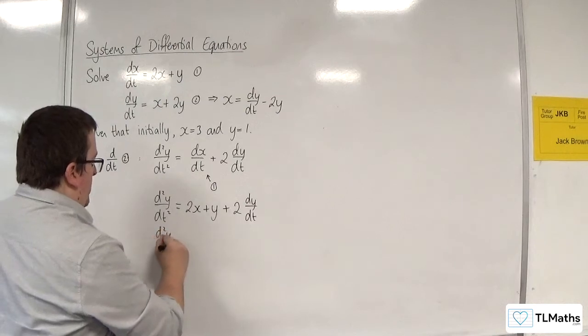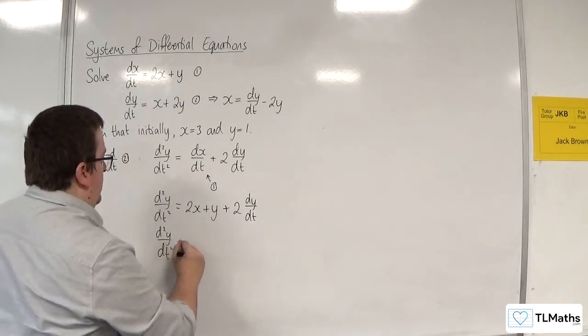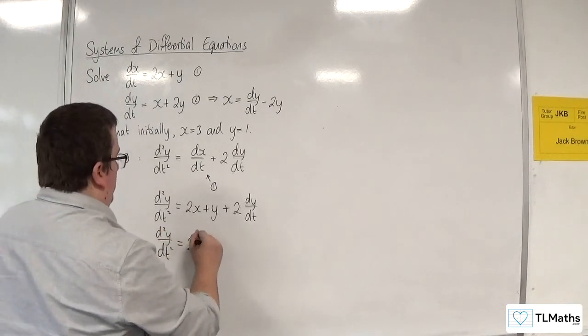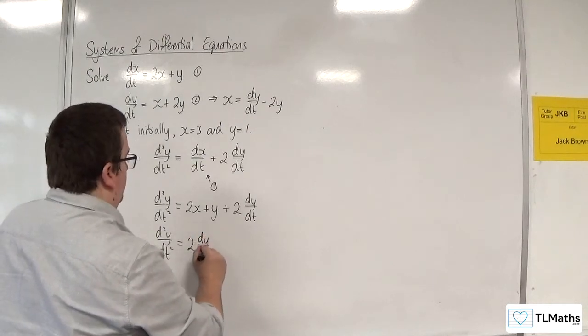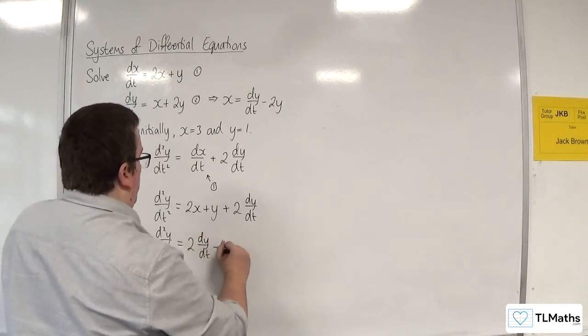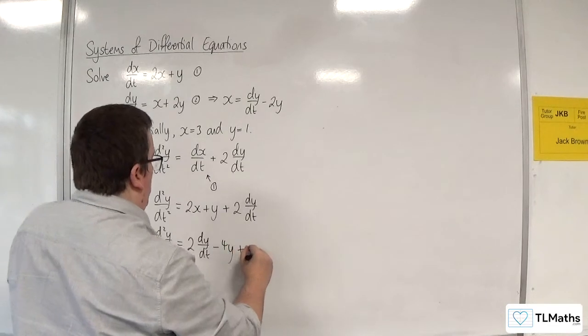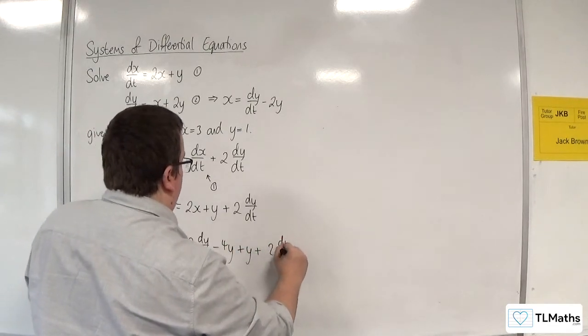So d2y by dt squared is equal to 2 lots of x, so 2 lots of dy by dt, take away 4y. Then I've got the plus y and the 2 dy by dt there.